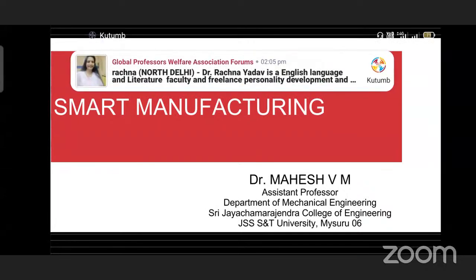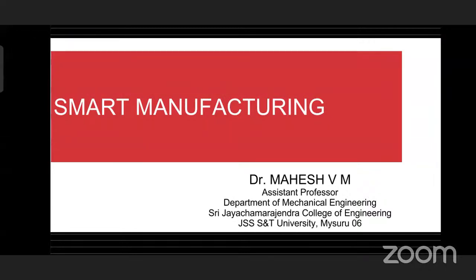Today I will be discussing an in-depth introduction to smart manufacturing. Smart manufacturing systems are fully integrated collaborative manufacturing systems that respond in real time to meet changing demands and conditions in the factory, as well as in the supply network and in consumer needs. In earlier days, manufacturing meant making a product on the shop floor following a sequence of scheduling. But nowadays, smart manufacturing uses fully integrated, collaborative systems in real time to meet changing demands.